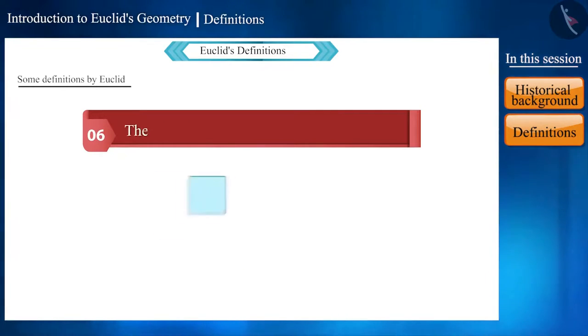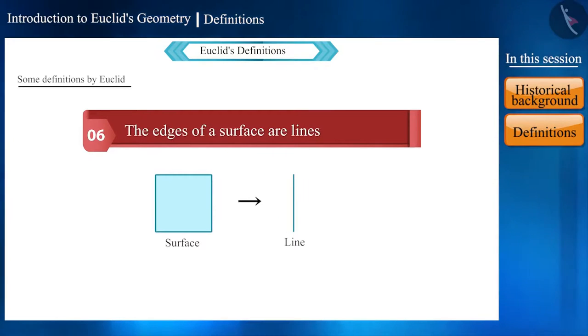The sixth definition says that the edges of a surface are lines, sides, that is, boundaries.